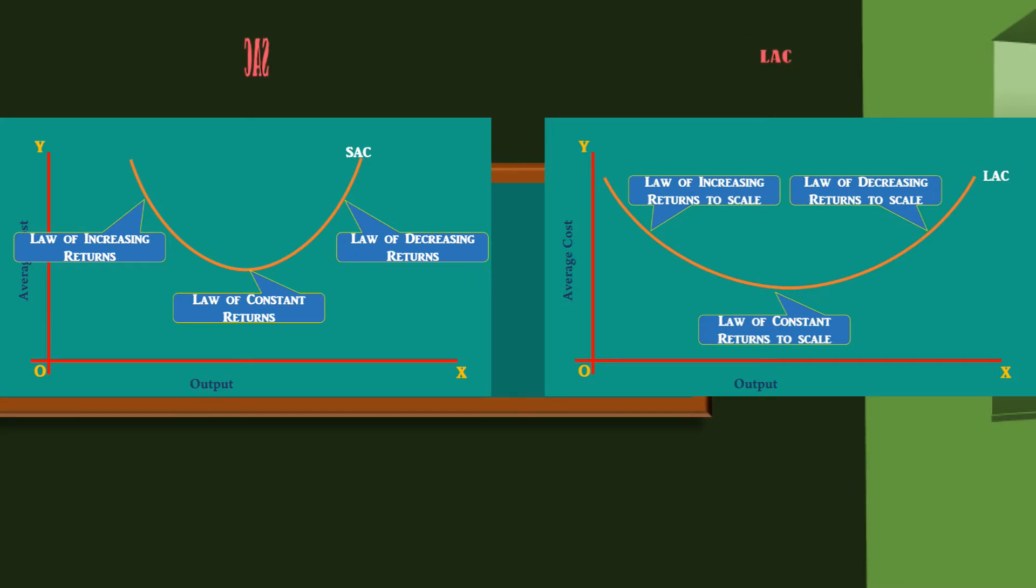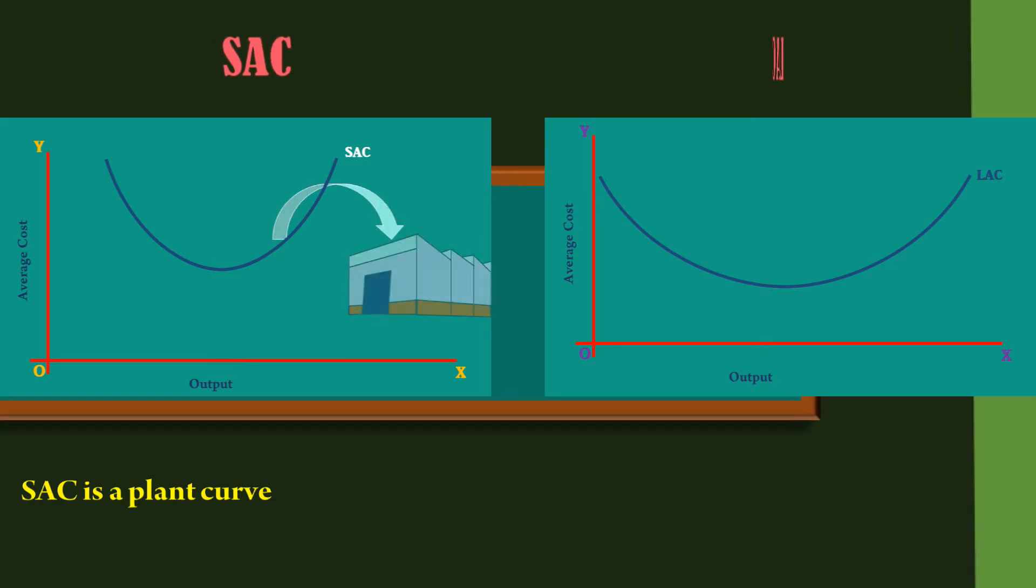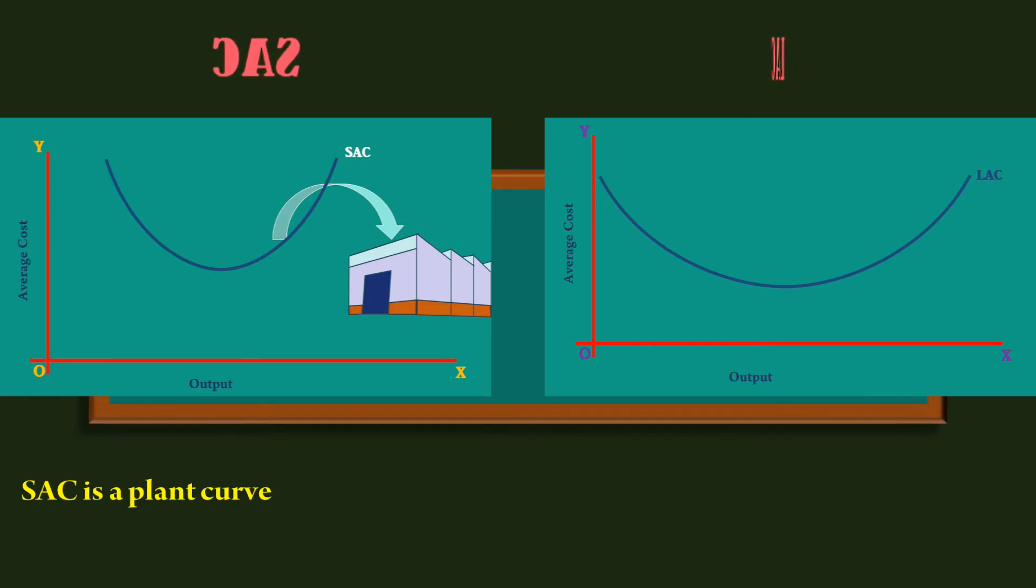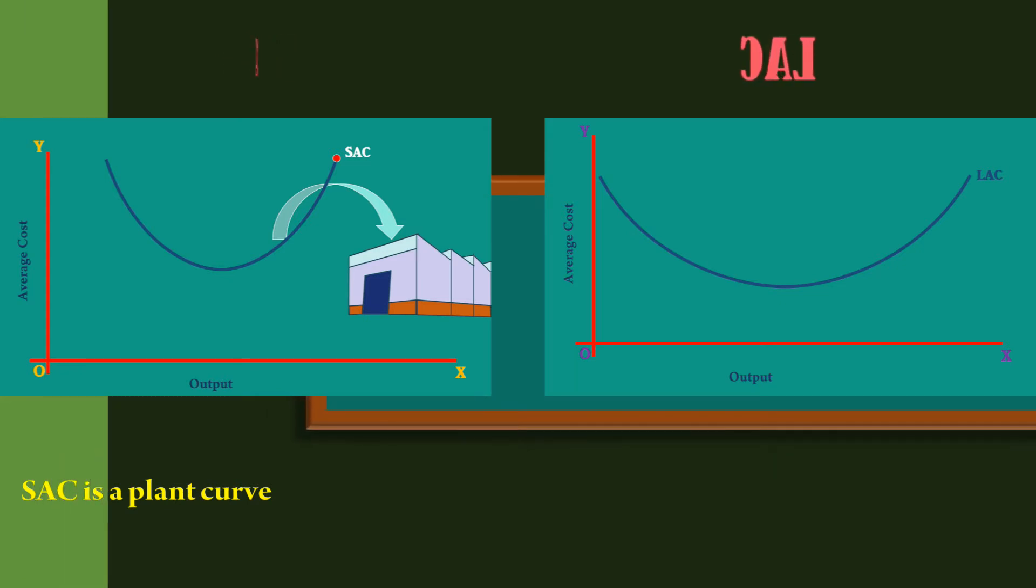4. The short run average cost curve is a plant curve. In the short run, a firm is tied to a given plant size. It has to use that plant. It has to move along the short run average cost curve. It means, only by varying the variable cost, the firm produces different levels of output.